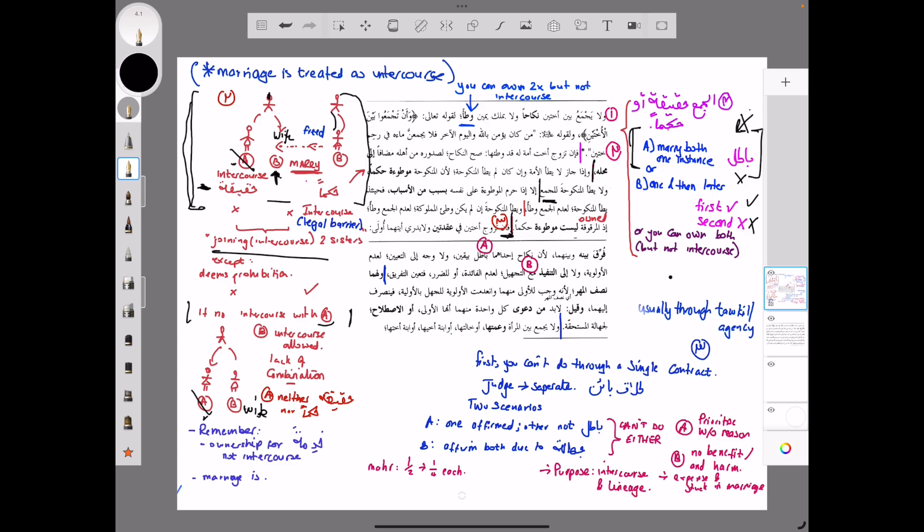Remember the reason the author is mentioning two separate contracts is because of what we said here, right? If it was done in one contract, it would have been batil anyway. But what happens in this scenario is that someone's married two sisters in two separate contracts. The problem is this: he doesn't know which one he married first. They will both be separated from him. Why is that?